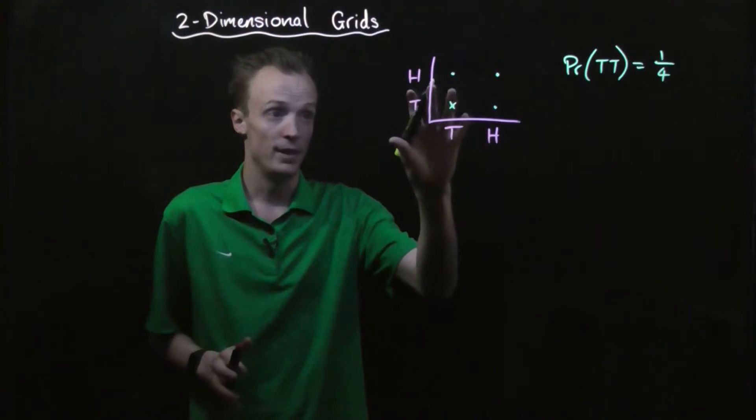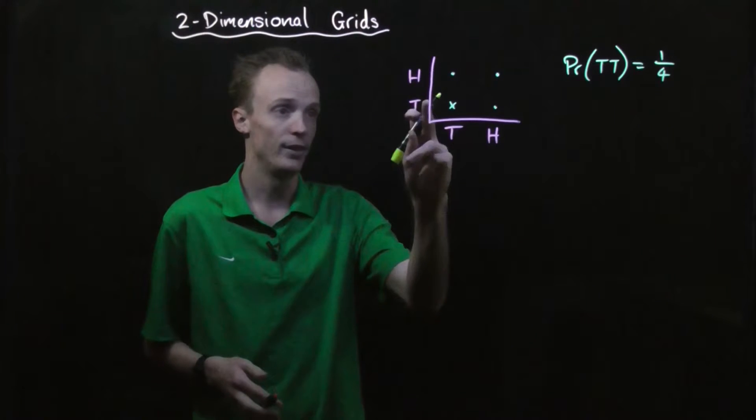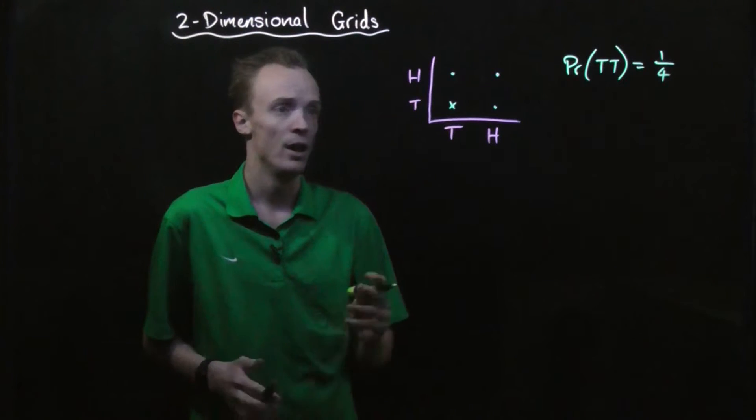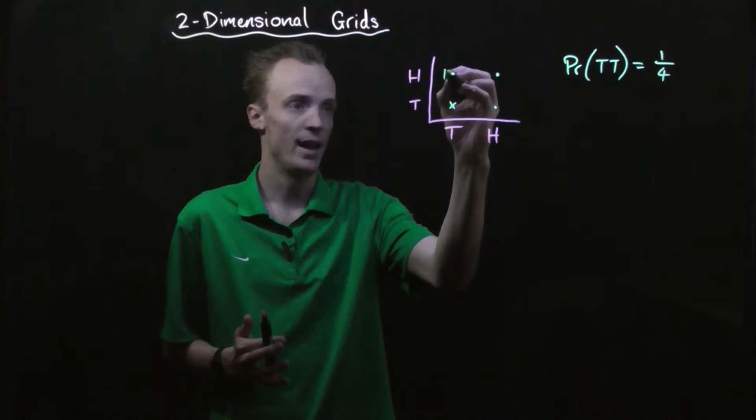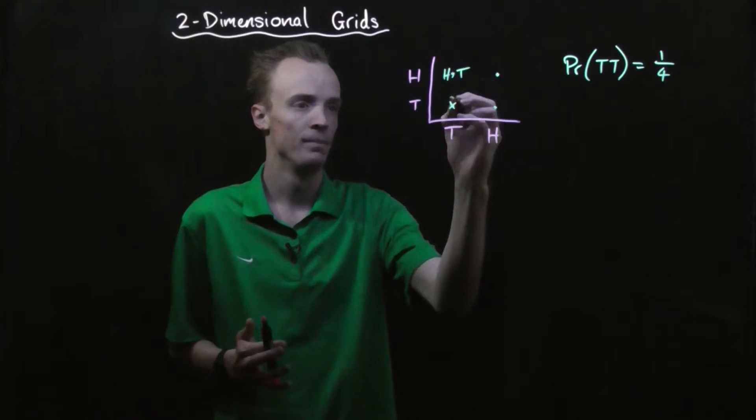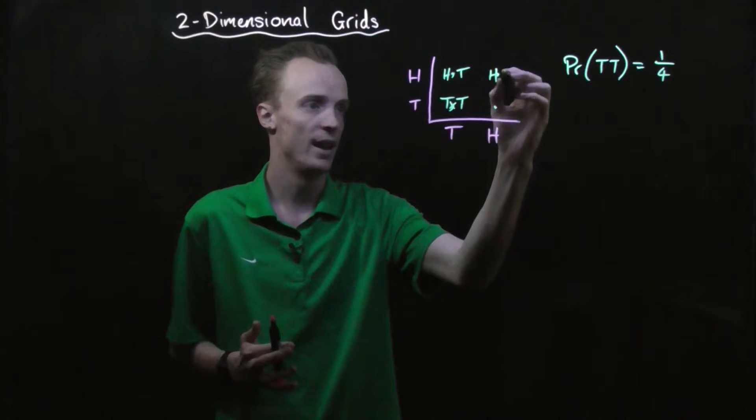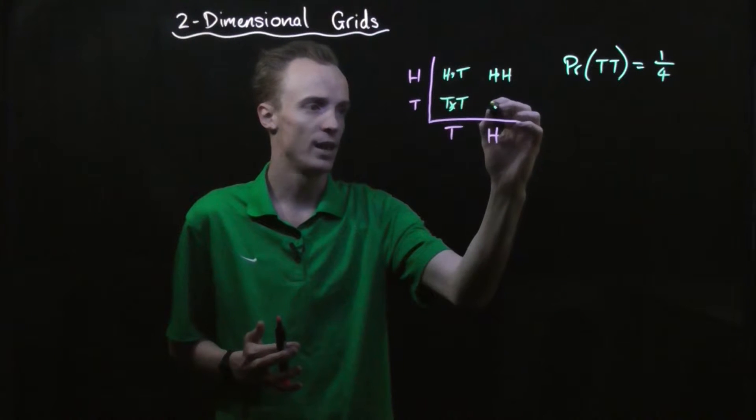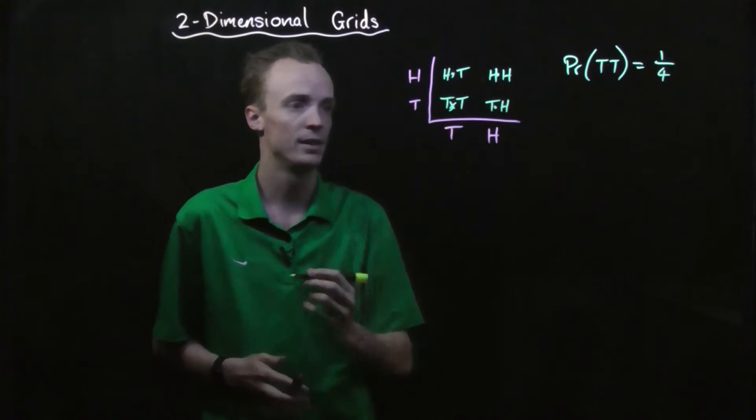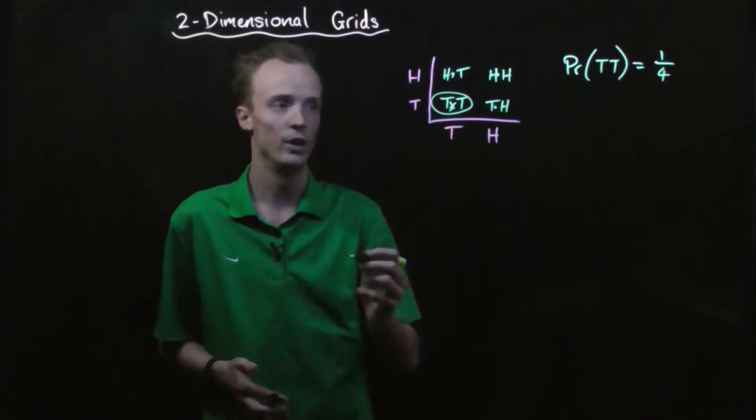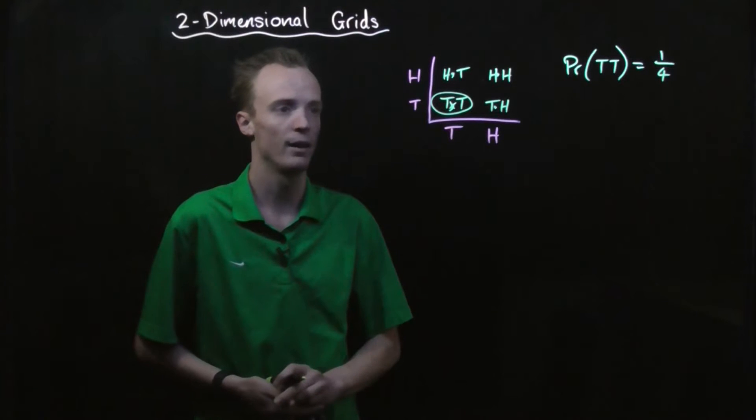Another way that we could represent our two-dimensional grid is instead of putting little dots to represent each outcome that exists, we can actually list them. So here we've got heads and tails, we've got tails and tails, we've got heads and heads, and we've got tails and heads. And then when we look to answer our problem, we just circle which ones are our successful outcomes.